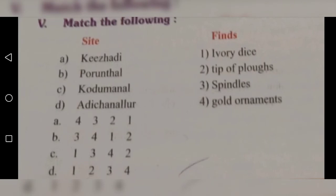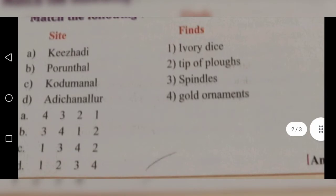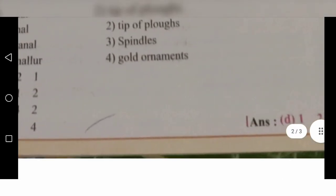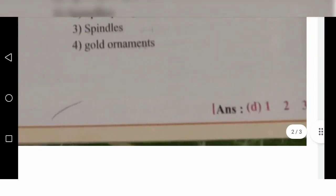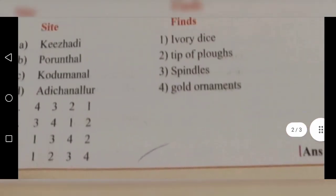Match the following. The sites are: Kiledi, Porunthal, Kodumanal, and Adichanallur. The items are: ivory dice, tip of ploughs, spindles, and gold ornaments. Option D is the correct answer. Kiledi — ivory dice; Porunthal — tip of ploughs; Kodumanal — spindles; Adichanallur — gold ornaments.